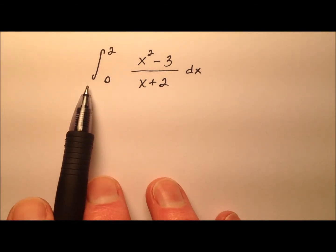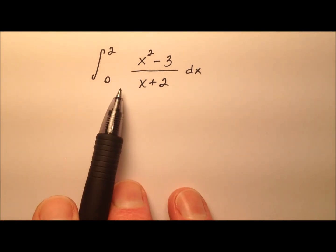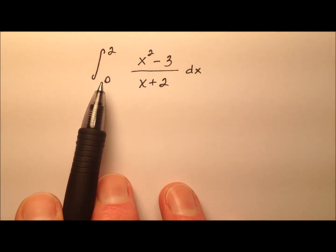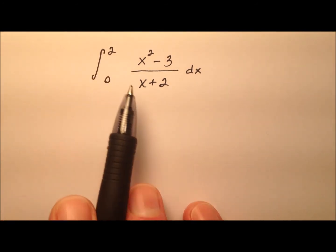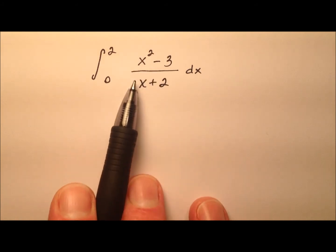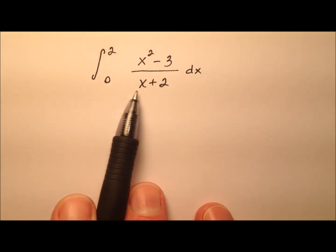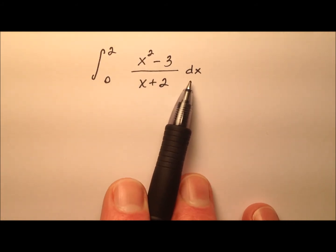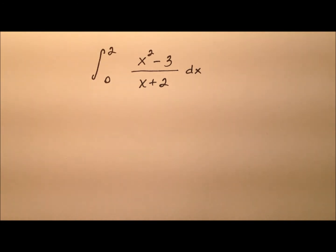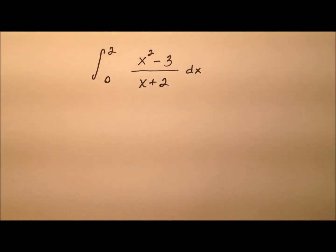In this example, we're going to evaluate this definite integral from 0 to 2, where our integrand is a rational expression, with respect to x. If you'd like to try this first, go ahead and pause the video and do so, then come on back and we'll work it together.